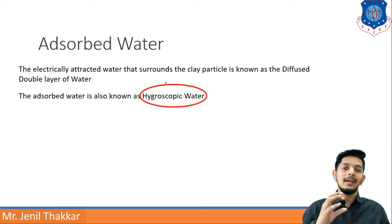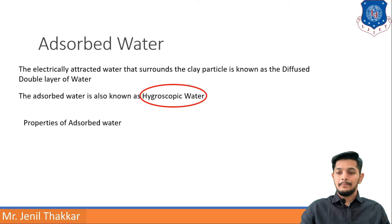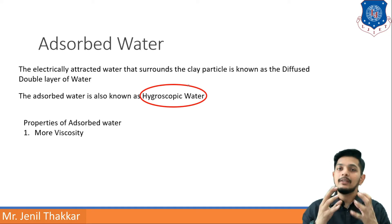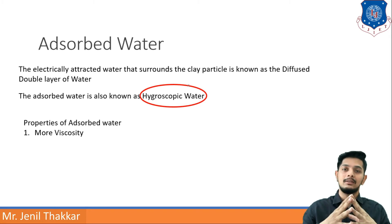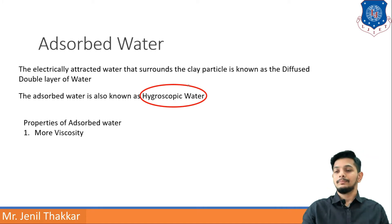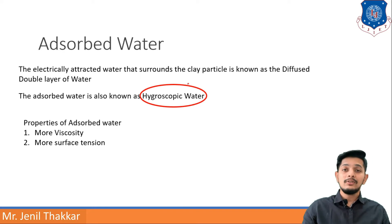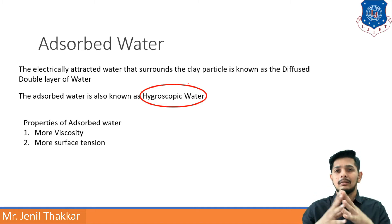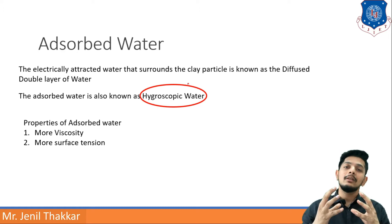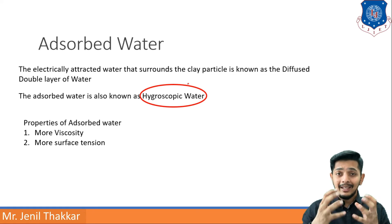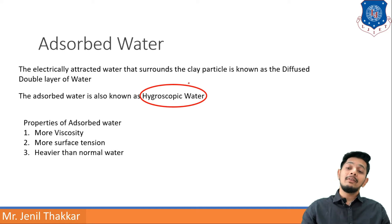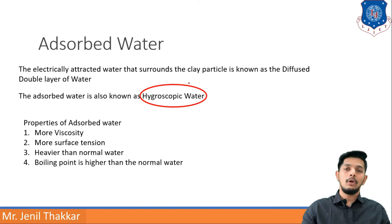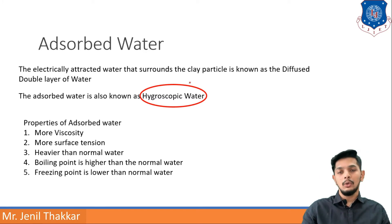Properties of adsorbed water: it has more viscosity — that is, more resistance to flow — compared to free water. It also has more surface tension. It is heavier than normal water, has a higher boiling point than normal water, and a lower freezing point than normal water.